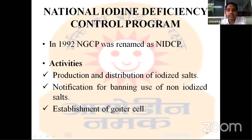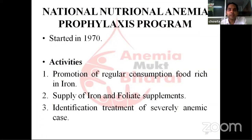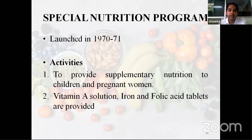National Iodine Deficiency Control Program: in 1992, the National Goiter Control Program was renamed as the National Iodine Deficiency Control Program. Activities include production and distribution of iodized salts, notification for banning the use of non-iodized salts, and establishment of goiter cells. National Nutritional Anemia Prophylaxis Program was started in 1970. Activities include promotion of regular consumption of iron-rich food, supply of iron and folate supplements, identification and treatment of severely anemic cases. Special Nutrition Program was launched in 1970–71 with activities to provide supplementary nutrition to children and pregnant women; vitamin A solution and iron and folic acid tablets are also provided.